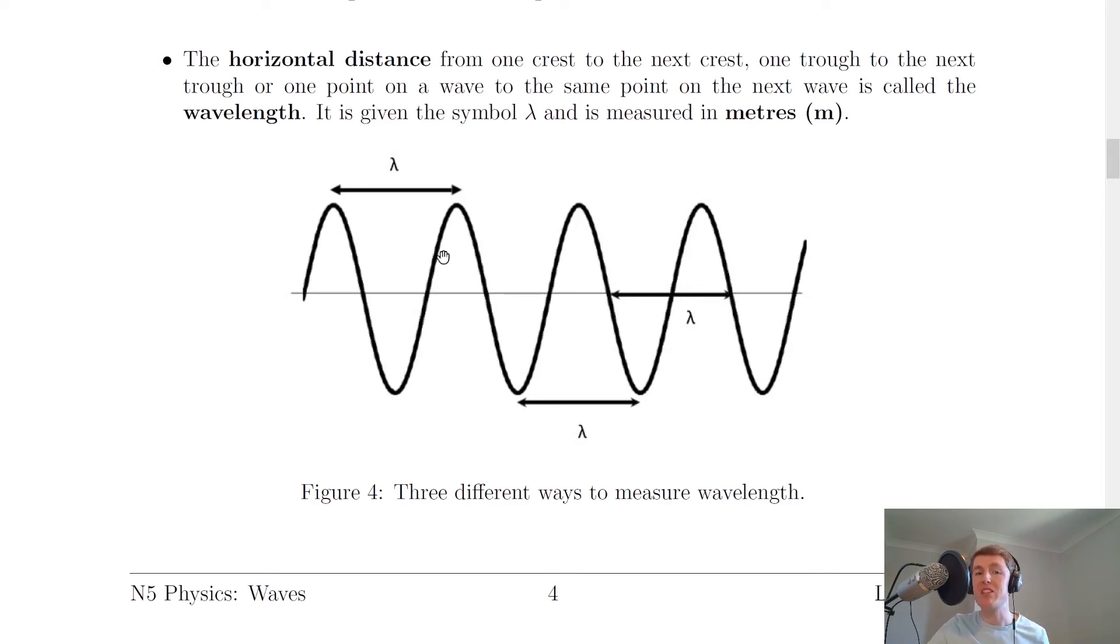One more example might be, say I was to choose a point over here and I was to go all the way up, all the way back down, and back to where I started. Then if I wanted to get one wavelength along from this point, it would be over here, at this point here.